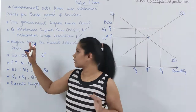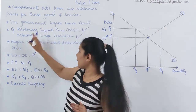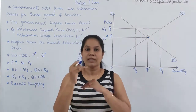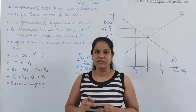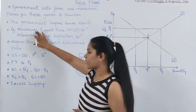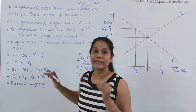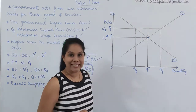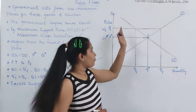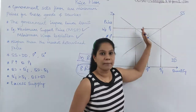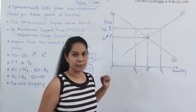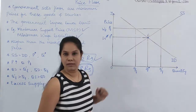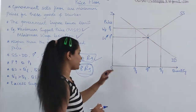MSP and minimum wage legislation work in exactly the same way. They are both very different concepts — MSP is related to agriculture crops and minimum wage is related to labour wages. Who is going to decide this? The government is going to decide — by seeing the equilibrium. Now I am going to bring this diagram of explanation.